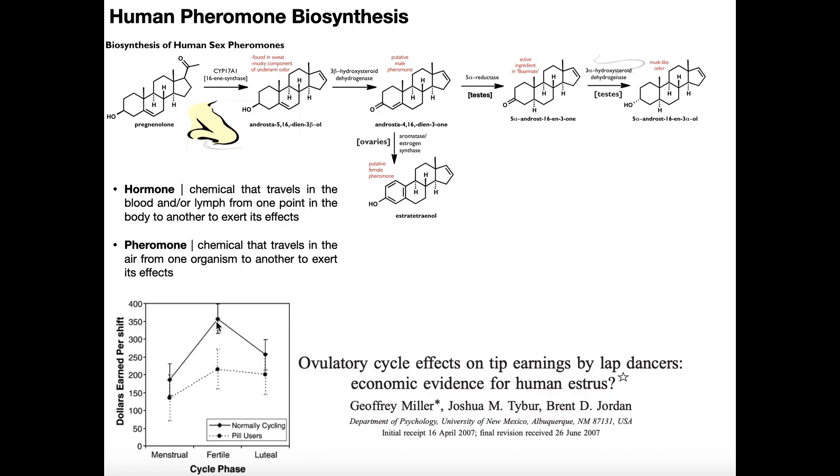Now, why is this? Why did the women who were fertile get more money from the men? You could also ask the question, why did those men overall give more money to the fertile women? And the answer is simple, men are pigs, but that effect is enhanced by these fertile women releasing estratetraenol.